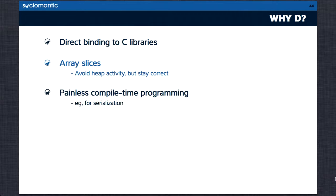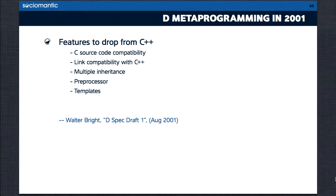Let's look back at the history and see how closely the current language matches that original goal. Walter published the original spec for D back in August 2001, mostly written with reference to C++ based on his experience writing C++ compilers. He had a list of features to keep from C++, and also a list of features to drop — the mistakes C++ made. Multiple inheritance, pre-processor, digraphs and trigraphs — and templates. That's right. D was explicitly designed to not have templates.